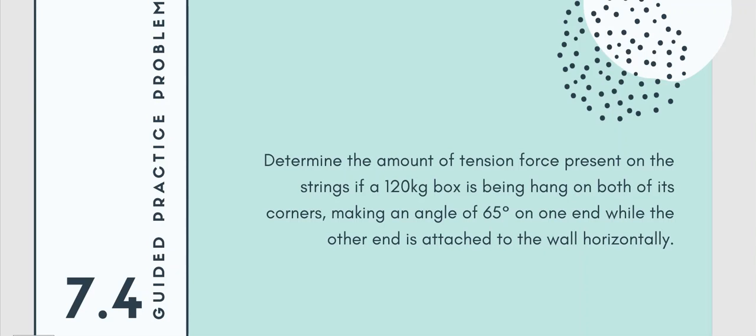Hello everyone, in this video we will solve guided practice problem number four of module number seven about applications of Newton's laws of motion. The problem: determine the amount of tension force present on the strings if a 200-kilogram box is being hanged on both of its corners, making an angle of 65 degrees on one end while the other end is attached to the wall horizontally.